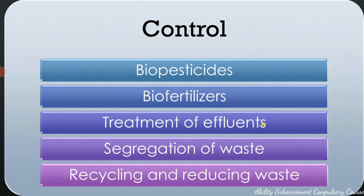Treatment of effluents is also very important — effluents should not be directly emptied into the soil. Industries and domestic setups must treat their effluents before discharging into the soil. There also needs to be segregation of waste so that biodegradable waste can be used by microorganisms for biogas production, and we can recycle and reduce the total amount of waste. This ensures landfills do not increase in number, and only waste that cannot be recycled or reused goes into the landfill.